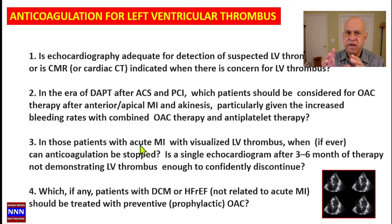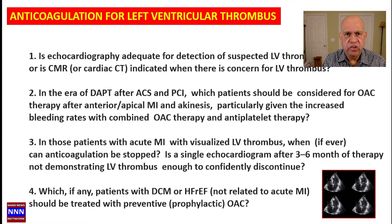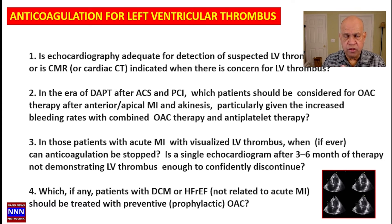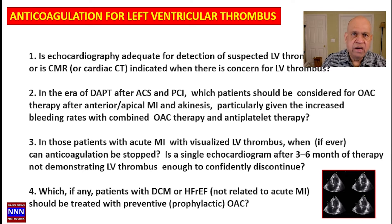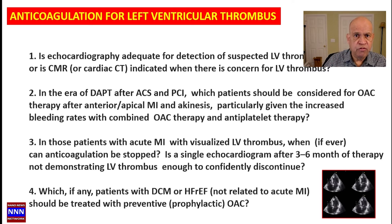When a thrombus has been identified and the patient has been treated with anticoagulation, how long do we treat them? The general consensus is to treat for three to six months, then perform a follow-up echocardiogram. If it shows complete resolution of the thrombus, we may be able to stop anticoagulation. However, we must consider that if there is a dyskinetic area, it is always prone to developing thrombus again, so we need to decide whether to continue anticoagulation or at least perform follow-up echocardiograms to detect recurrence.